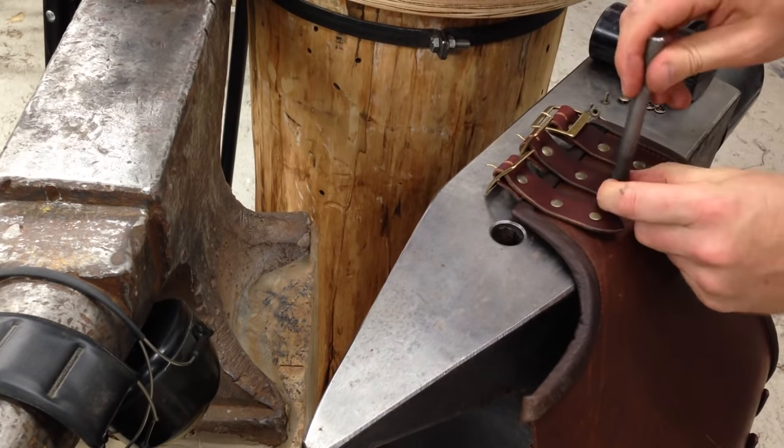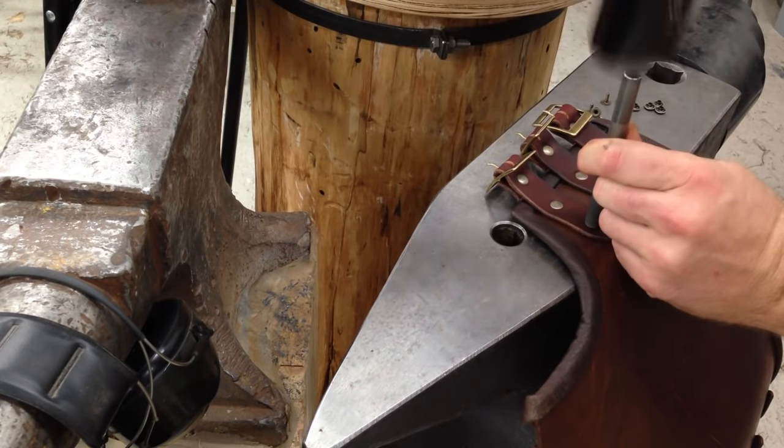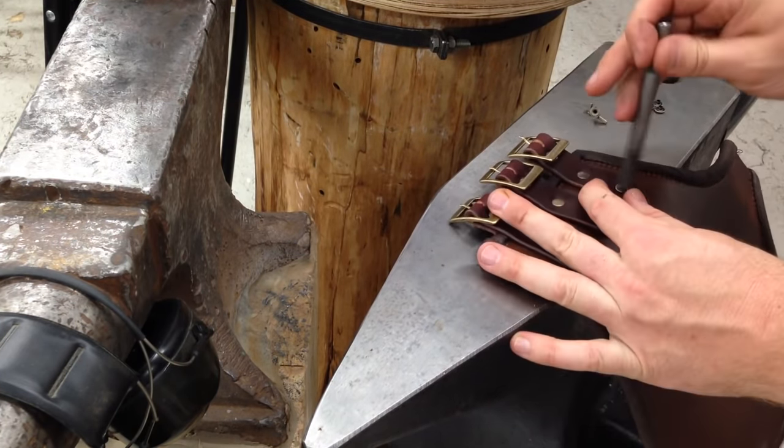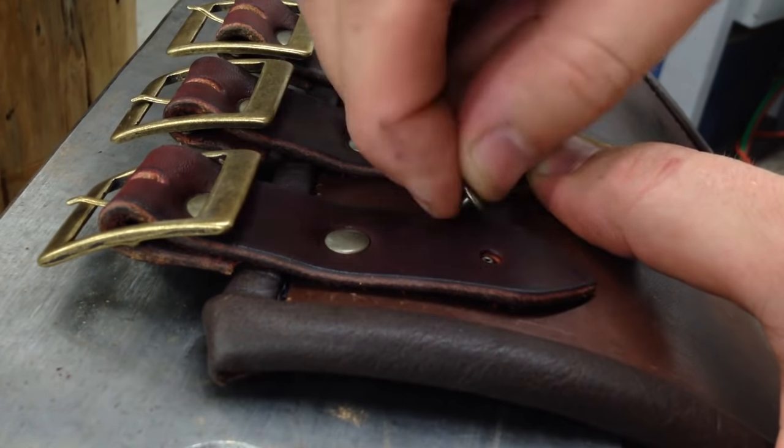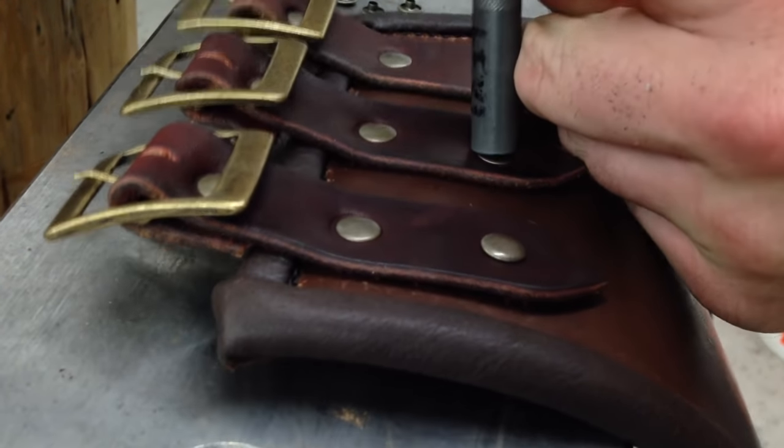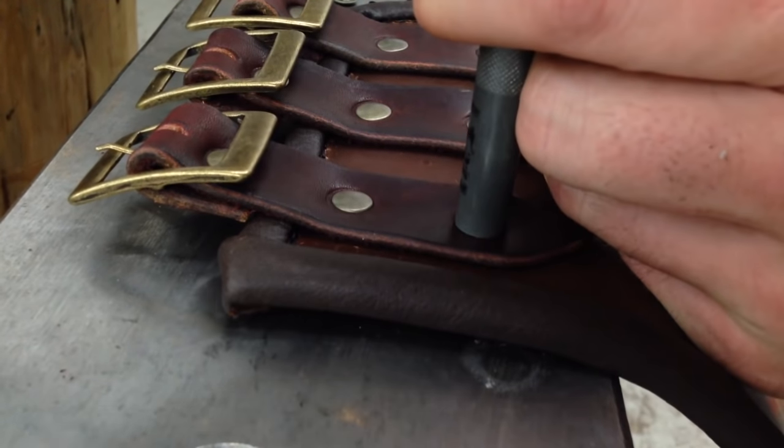If you punch both holes at once, there's a chance that one of the straps could be slightly offset, and that visually is always a little bit distracting. So I try to make sure I do the first set, then punch the second set of holes. That way you end up with perfectly aligned straps.